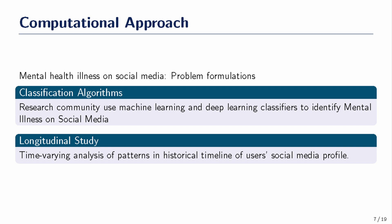Regarding computational approaches, two types of significant studies have been well established since 2013. Chancellor and Chaudhary have done path-breaking work in classification — for example, determining whether a user is normal or has suicidal tendencies from a given post. This kind of classification helps segregate posts that are critical and need attention.